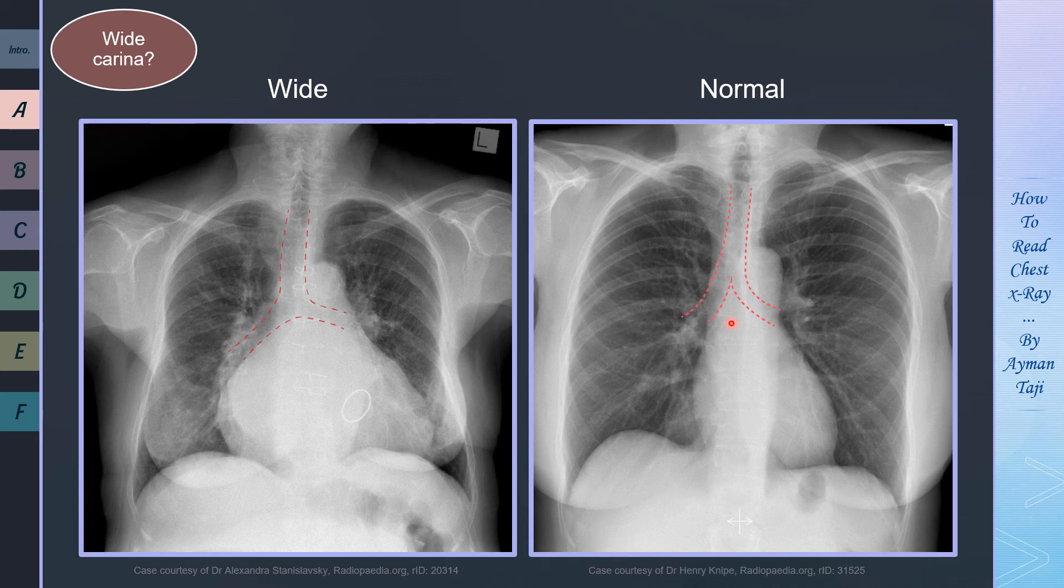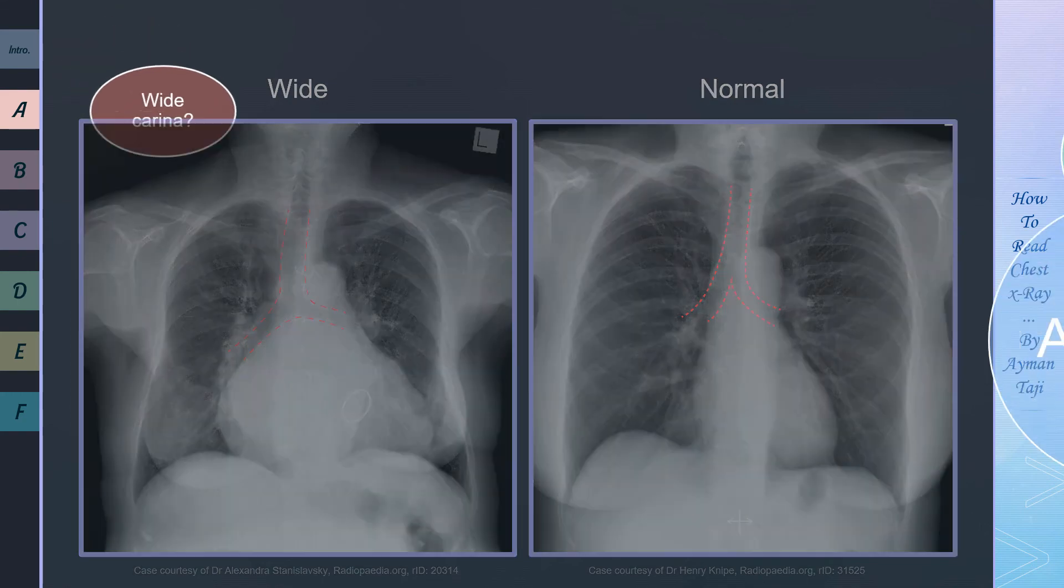Now what are the causes of a widened carina? Actually there are many conditions like a mass under the carina or left atrial enlargement as in this case here, but this sign is of poor diagnostic value due to the lack of sensitivity and specificity in identifying the underlying pathology.